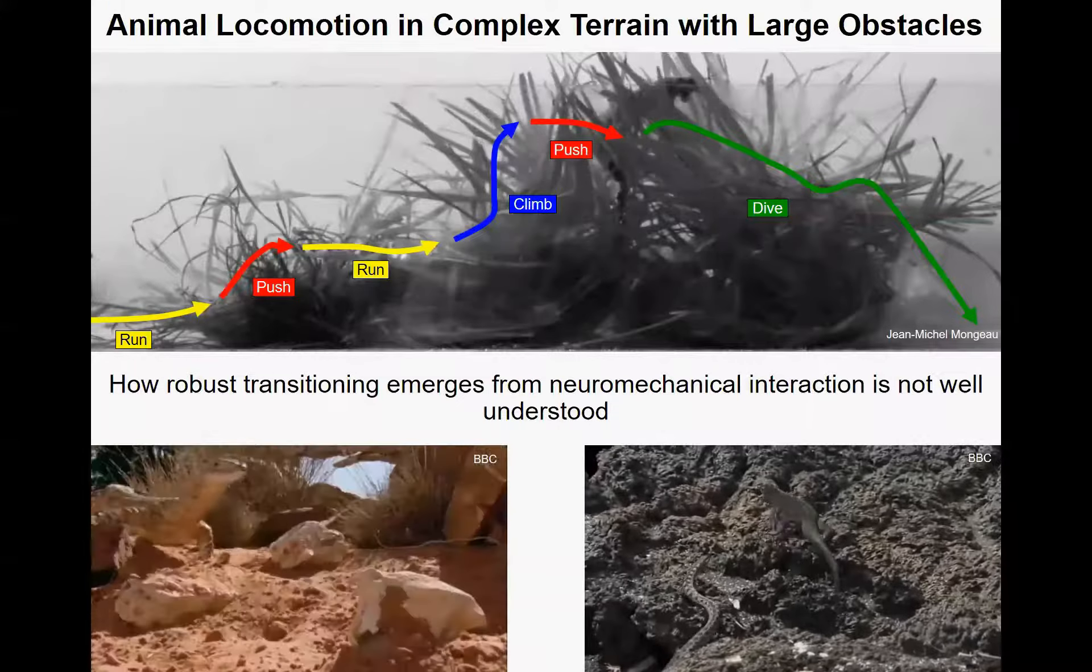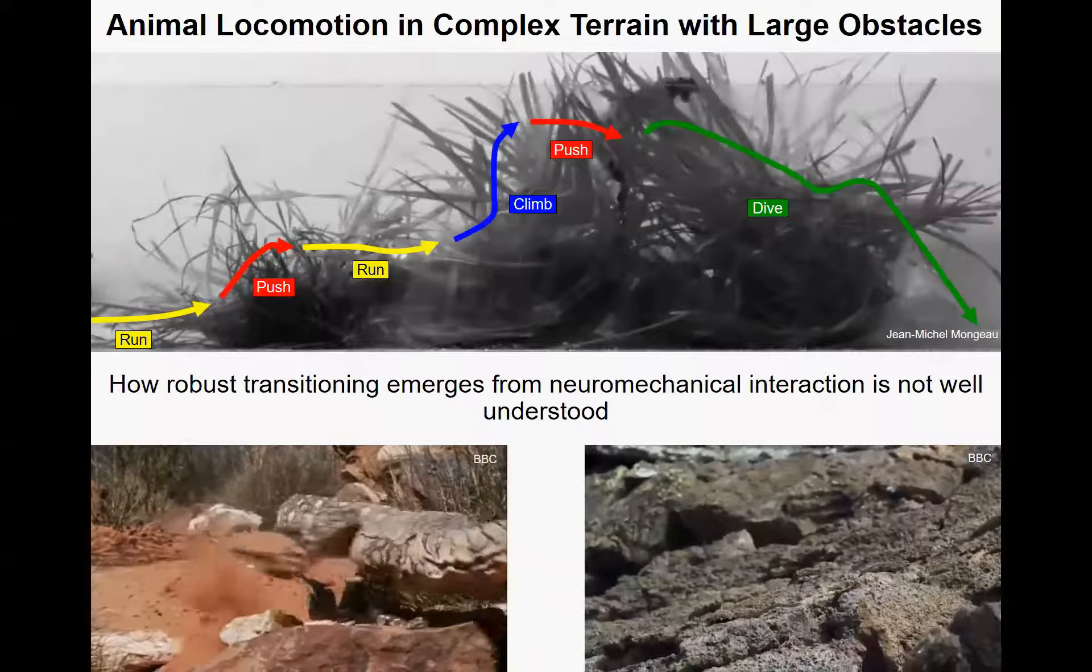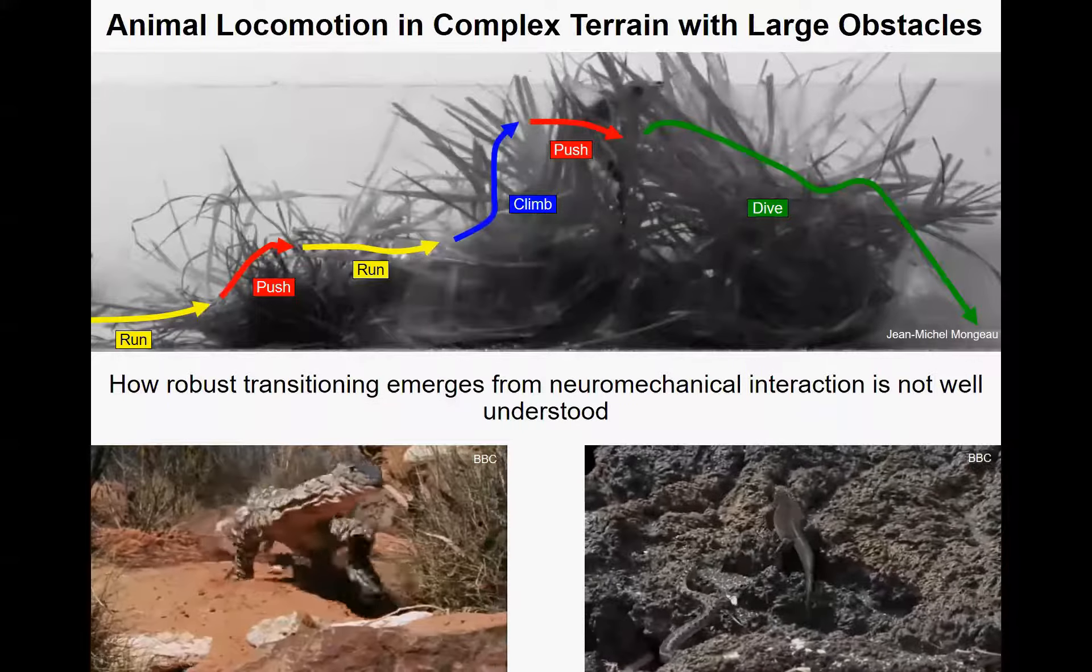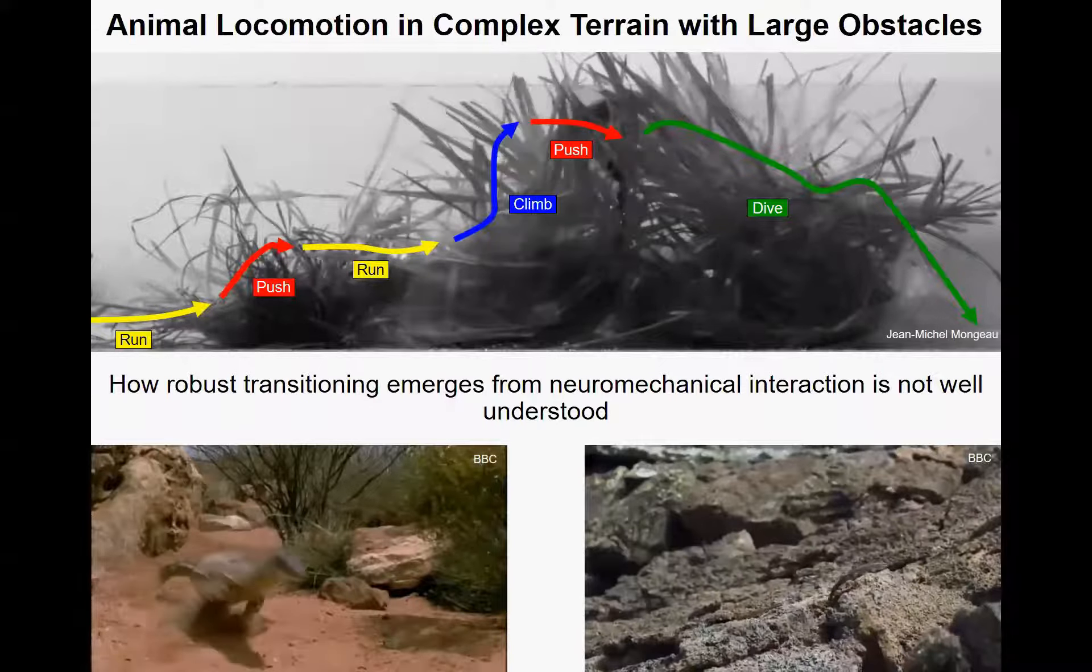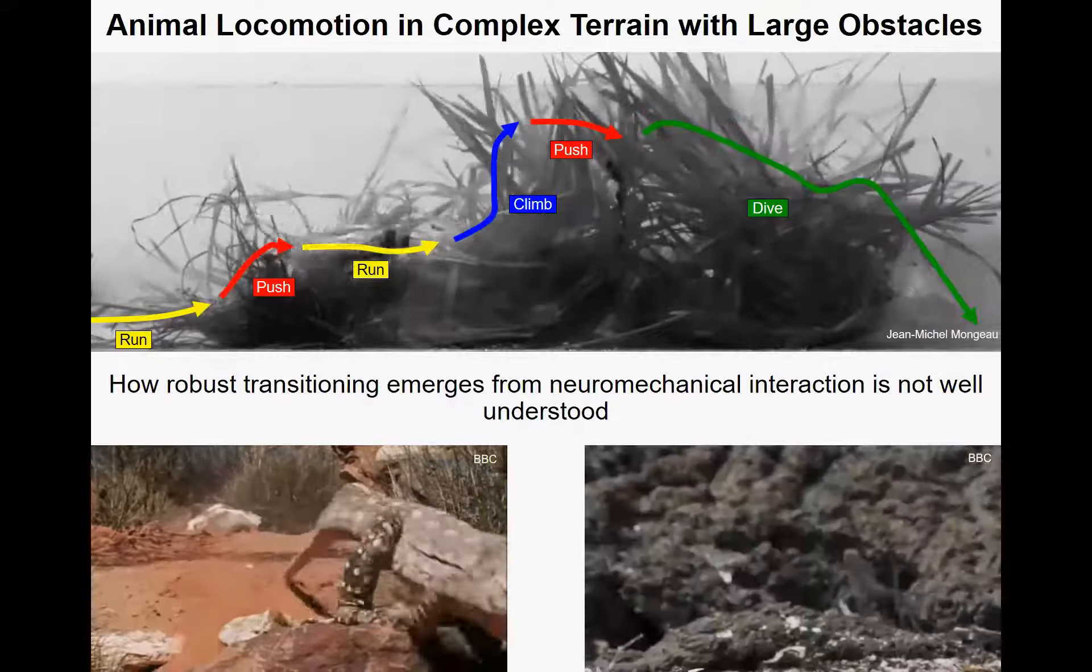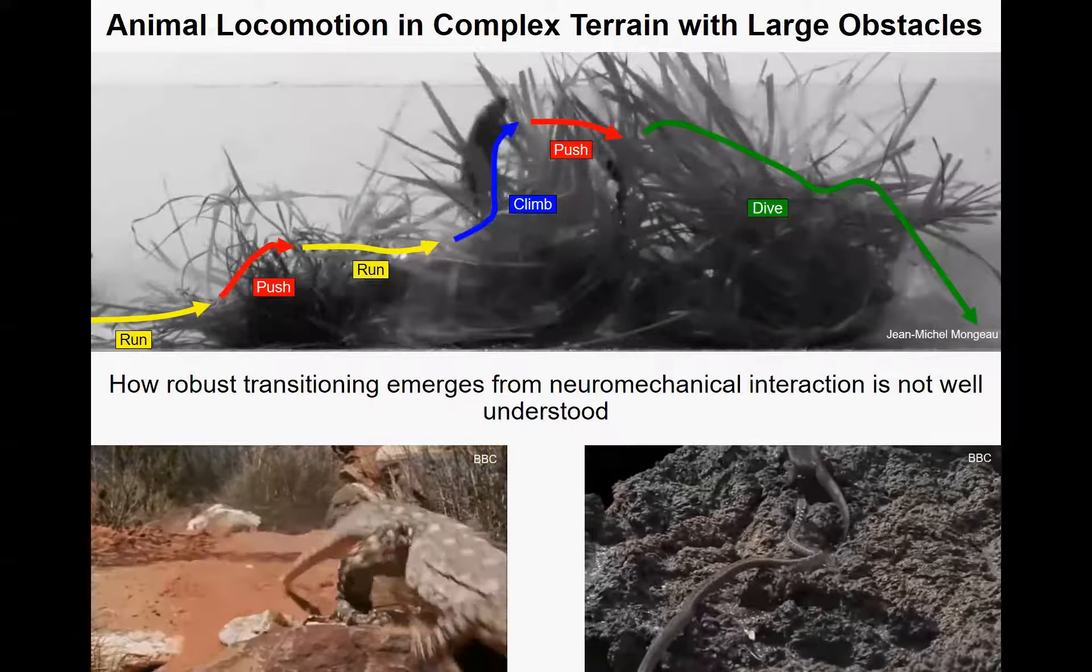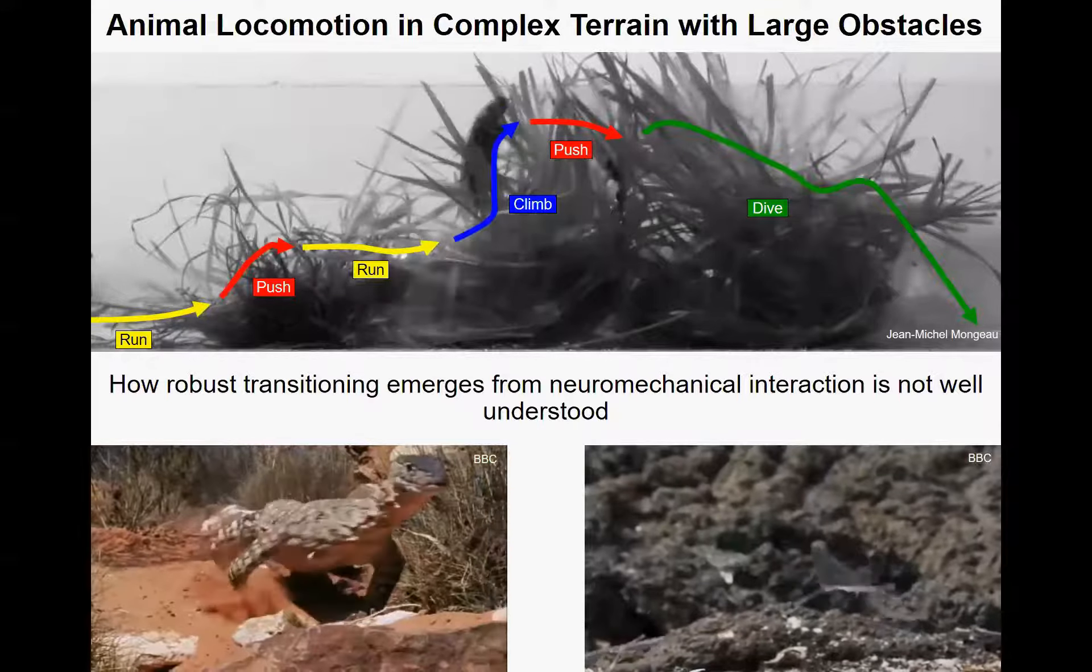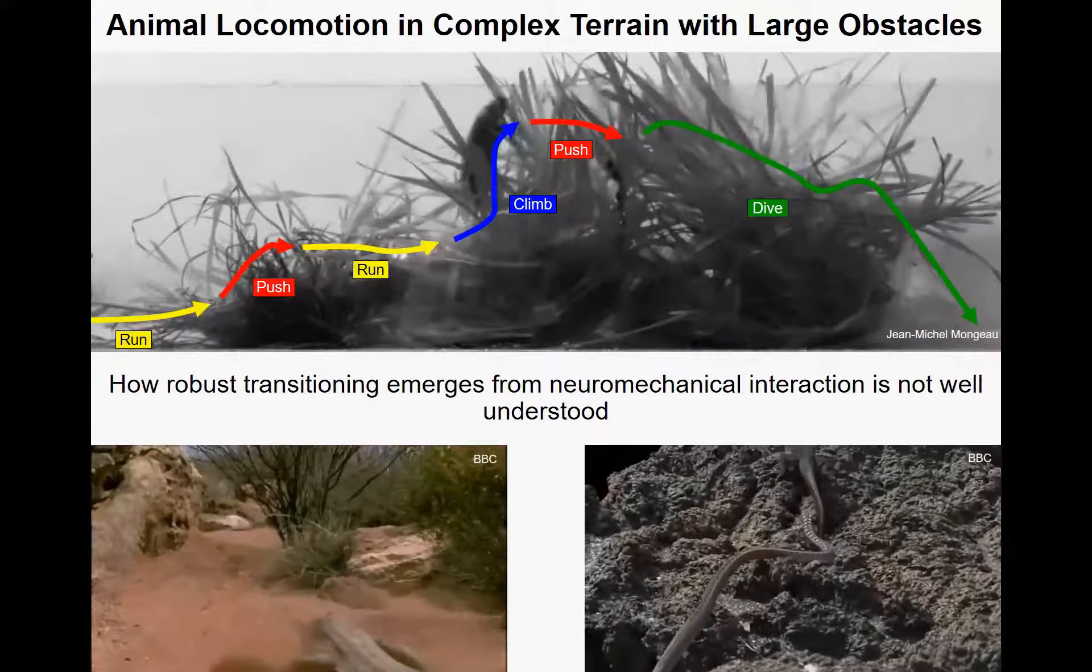As we all know, animals are good at traversing complex terrain. We can see these cockroaches traversing grass terrain by transitioning between locomotor modes. However, how robust transitioning emerges from neuromechanical interaction is not well understood. Understanding the physical mechanism of how such transitioning emerges can be really helpful to solve other engineering problems, like designing robust mobile robots.